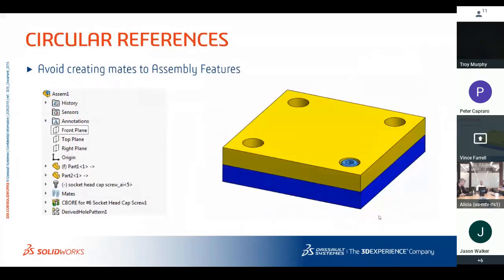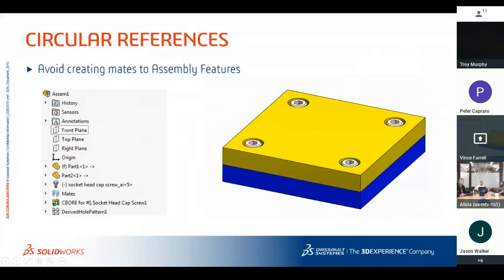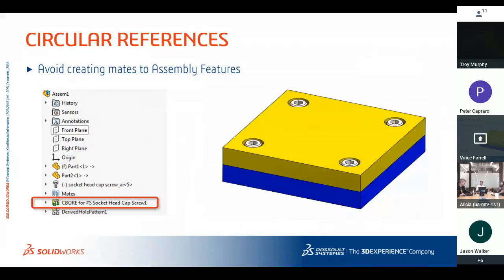Circular references are another issue. If you have parts in an assembly plus an assembly feature like a counterbore, SolidWorks has to go through and solve it multiple times — mates, then back to the assembly feature, creating a circular reference. The Performance Evaluation tool points these out so you can identify and avoid them.